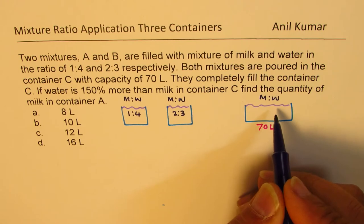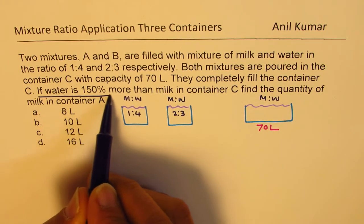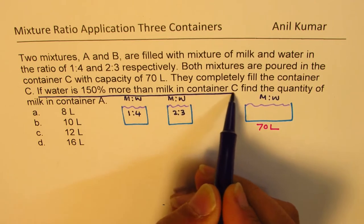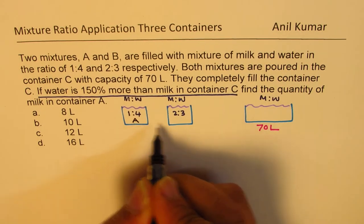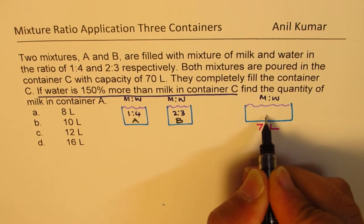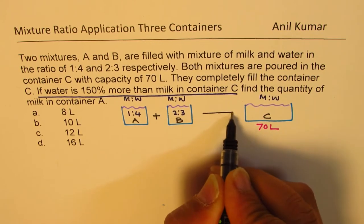And when you pour it down, you get water is 150% more than milk in container C. So let's try to figure out how much is the water in container C. This is our container A, this is container B, and that is container C. So they actually add up to give you this.